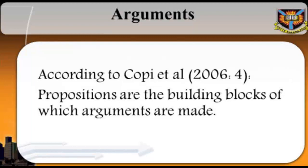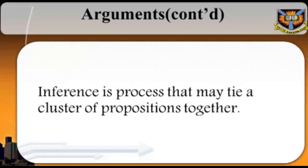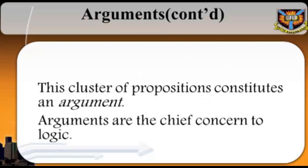Arguments: According to Copi et al. (2006, page 4), propositions are the building blocks of which arguments are made. When we reach or affirm one proposition on the basis of other propositions, we say that an inference has been drawn. Inference is a process that may tie a cluster of propositions together. Some inferences are warranted or correct; others are not. To determine whether an inference is correct, the logician examines the propositions with which the process begins and ends, and the relations between those propositions. This cluster of propositions constitutes an argument.